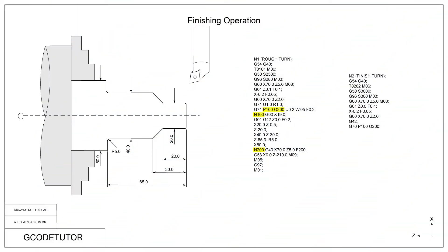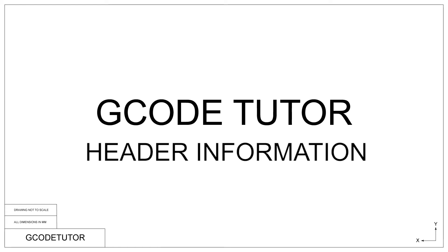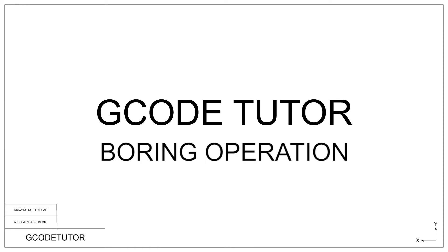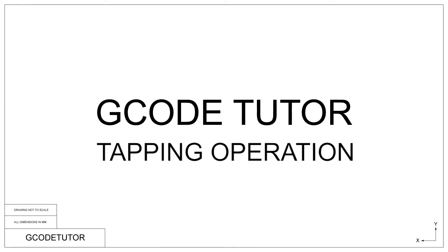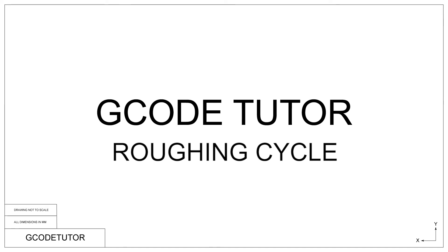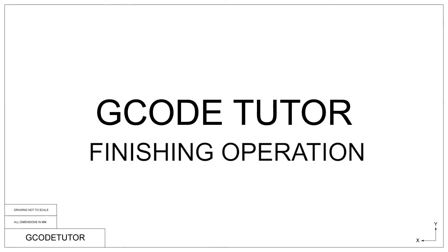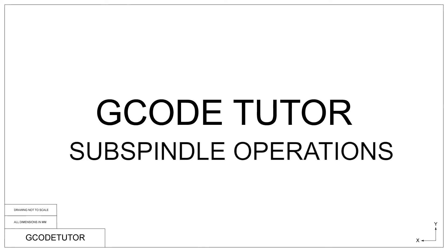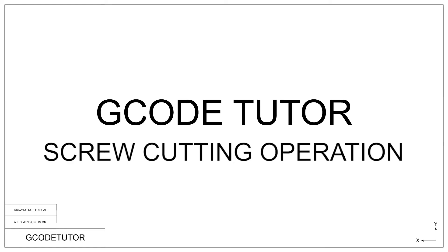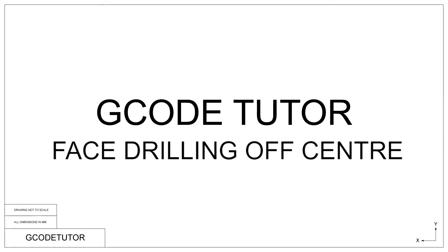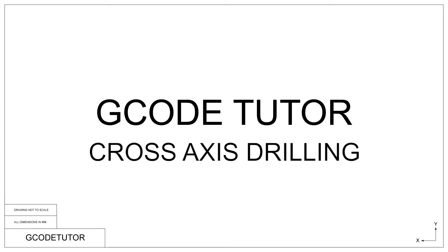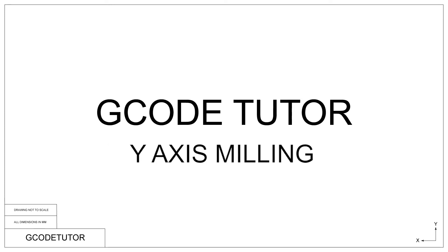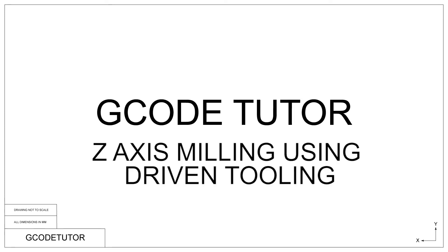This course covers every operation that you need to know: setting up the header correctly, boring a pre-drilled hole, tapping, using roughing cycles, using finishing cycles, parting off, machining using the sub spindle, screw cutting using two separate techniques, drilling bolt hole circles, cross-axis drilling, Y-axis milling, and Z-axis milling.